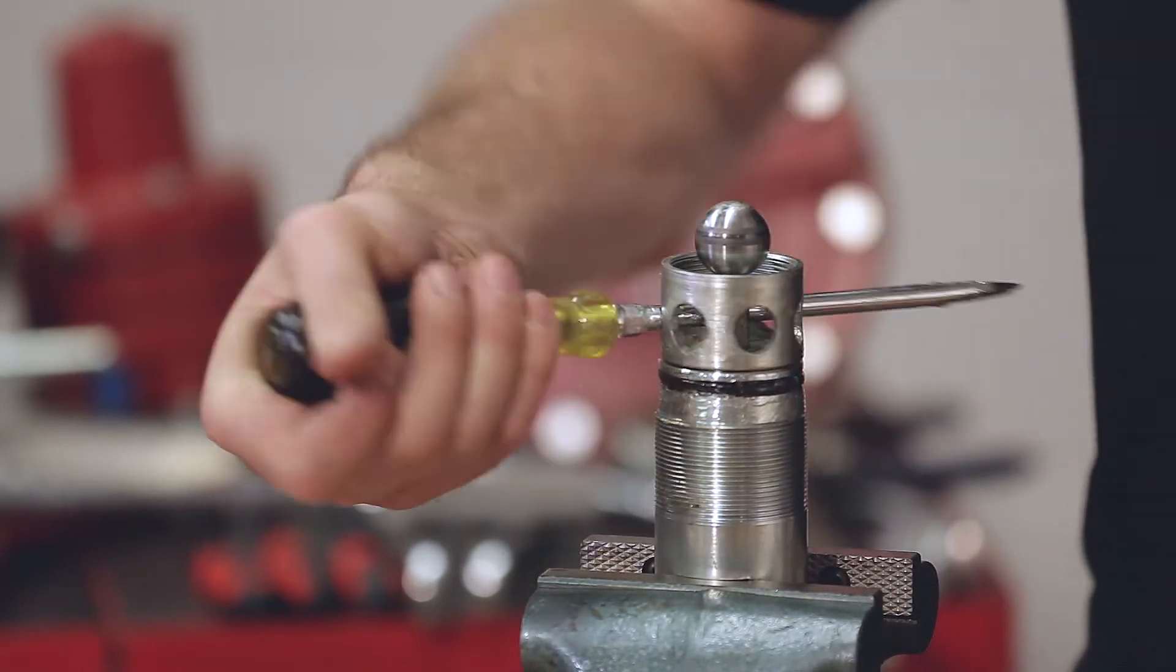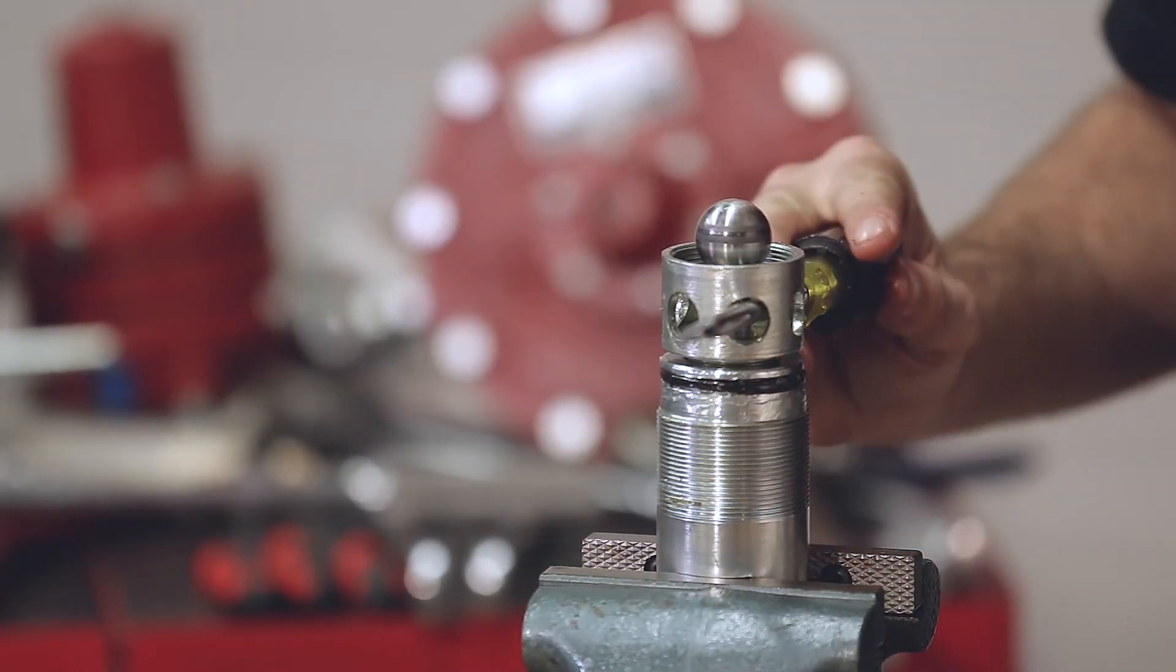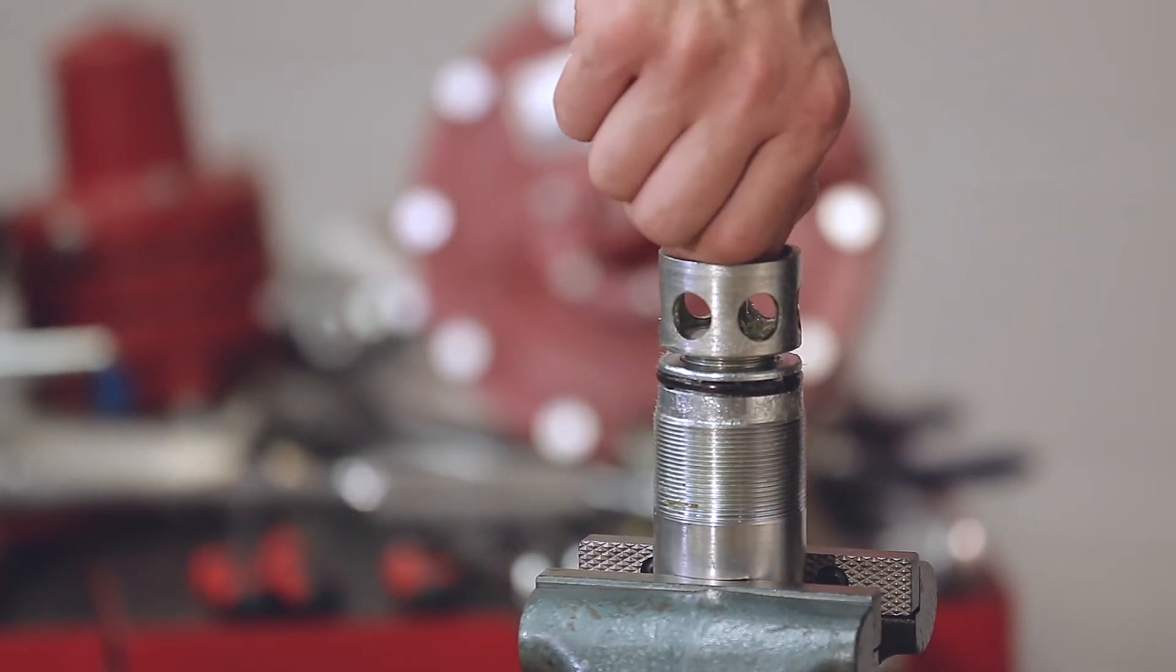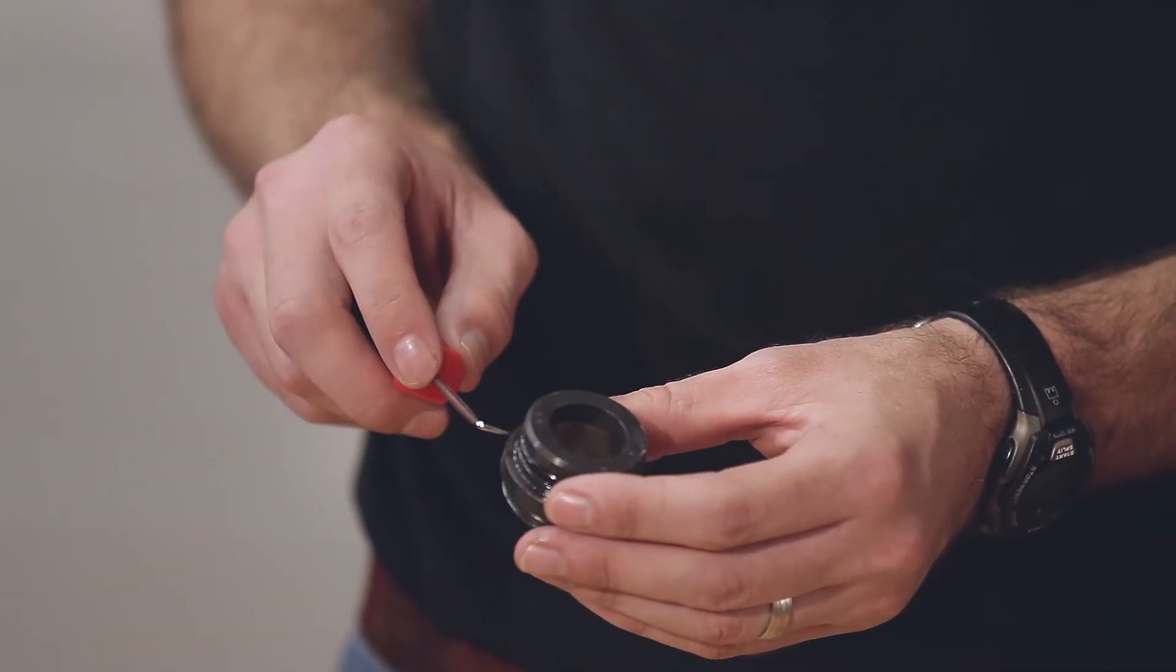Then you can use the screwdriver to loosen the cage and take tension off of your stem. You only need to loosen it a couple of rotations to keep the threads engaged, and then remove your O-ring from your seat.